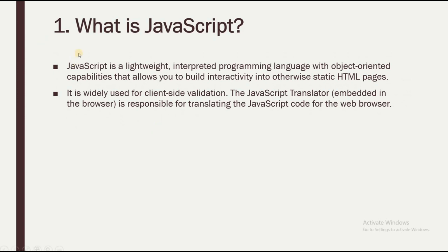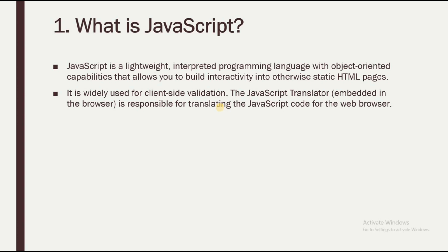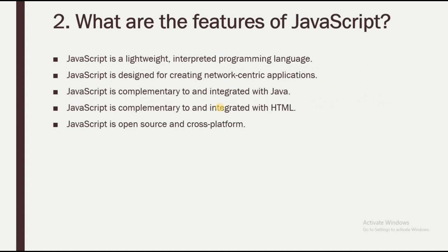JavaScript is a lightweight, interpreted programming language with object-oriented capabilities that allows you to build interactivity into otherwise static HTML pages. It is widely used for client-side validation. The JavaScript translator is already embedded in the browser and is responsible for translating JavaScript code for the web browser.